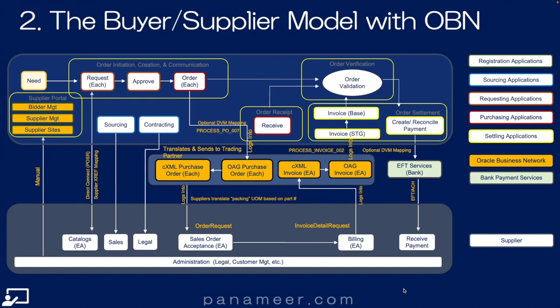Slide two: The buyer-supplier model within OBN. As you can see here, this lays out the procure-to-pay process on the top and the reciprocal order-to-cash supplier process on the very bottom. The OBN integration pieces are all in the middle, with OBN at the center. Click the link above to watch a quick video detailing buyer-supplier mappings and translation tools.